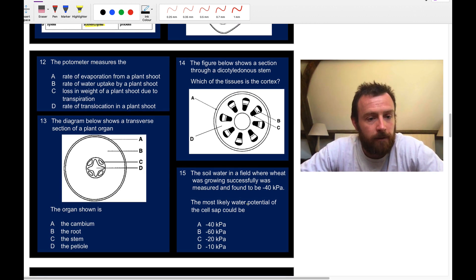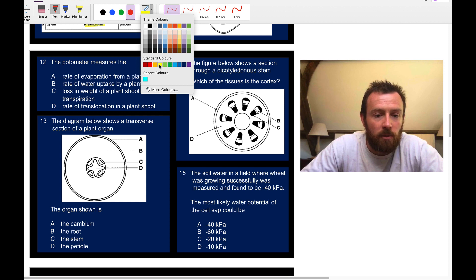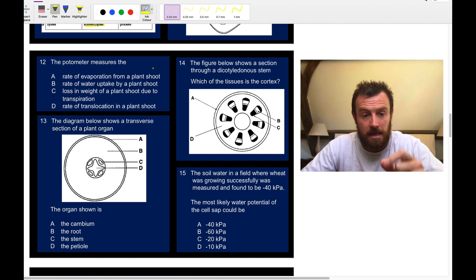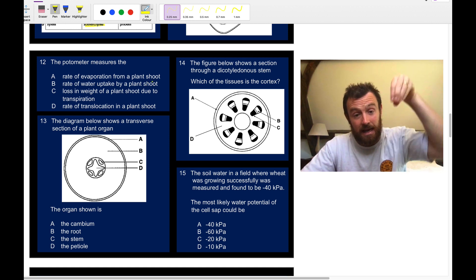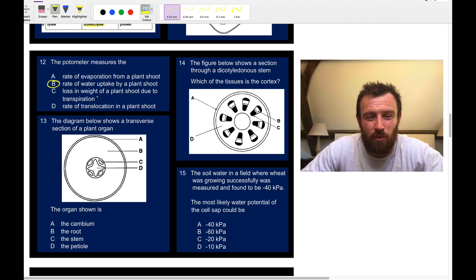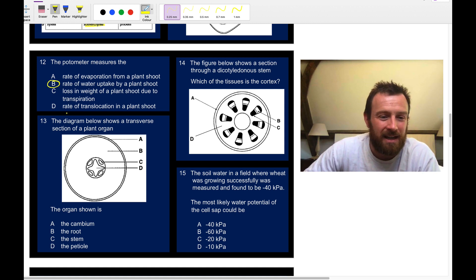Let's move on to the next set of questions, pause if you need to do these three right now. Question 12: what is a potometer actually measuring? You might be tempted to say the rate of evaporation from a plant shoot. It is measuring the rate of transpiration, however if you want to be really picky, and examiners love to be picky, it's actually measuring the water uptake. Because the water is being taken up into the stem, pulling that bubble along the little tube. So the answer is B.